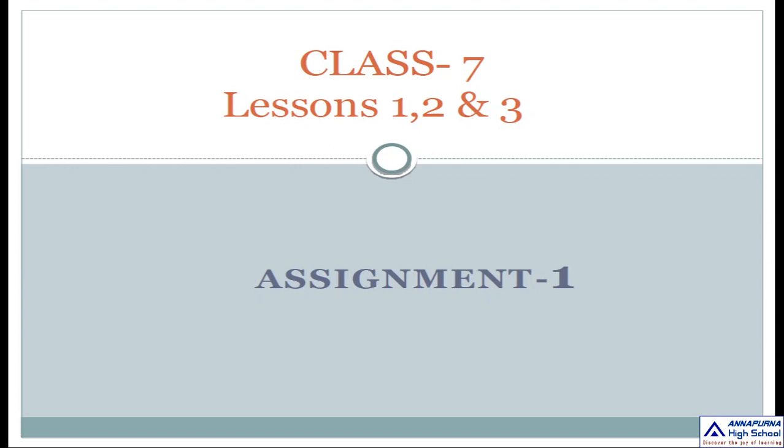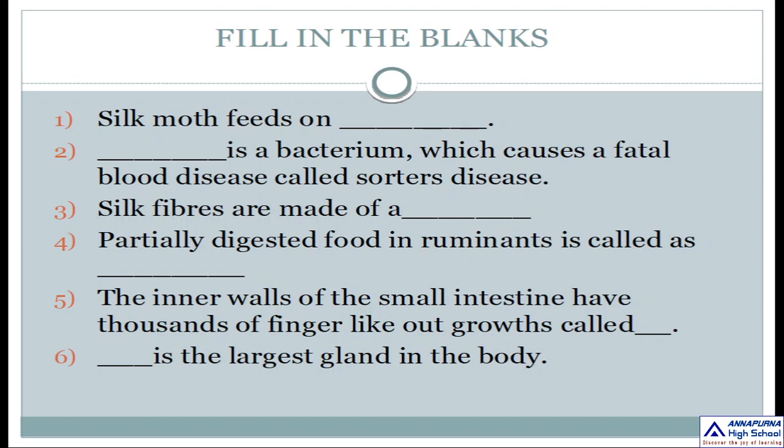Please don't try to copy from your books. This is Section 1: Fill in the blanks. Silk moth feeds on dash. Dash is a bacterium which causes a fatal blood disease called Sauter's disease. Silk fibers are made of a dash. Partially digested food in ruminants is called as dash. The inner walls of the small intestine have thousands of finger-like outgrowths called dash. Dash is the largest gland in the body.